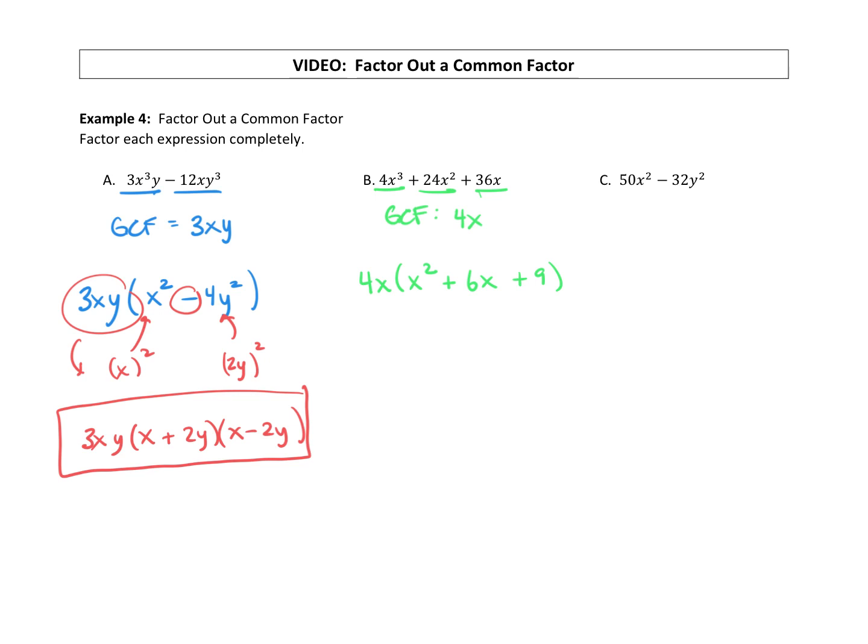Now we notice that we have a trinomial. And we're working on perfect square trinomials. Any chance this is a perfect square trinomial? Do we square anything to get x squared? Do we square anything to get a 9? And then is our middle term 2 times that x times that 3? And it is.